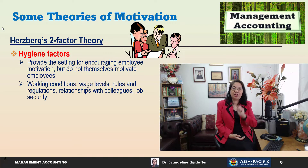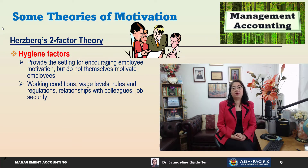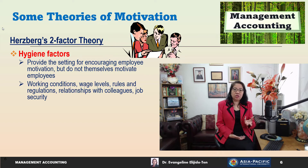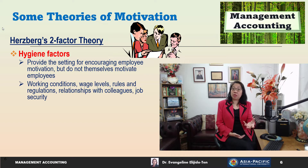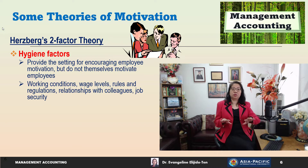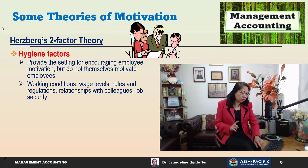According to Herzberg's two-factor theory, there are two factors that must be present for employees to be motivated. The first are hygiene factors, which provide the setting for encouraging employee motivation but do not motivate on their own. Examples include working conditions, wage levels, rules and regulations, relations with colleagues, and job security. When present, hygiene factors help prevent employees from becoming demotivated, but alone they will not motivate.